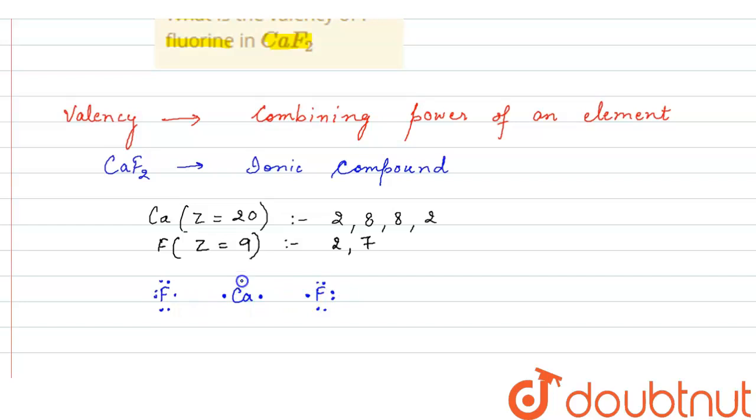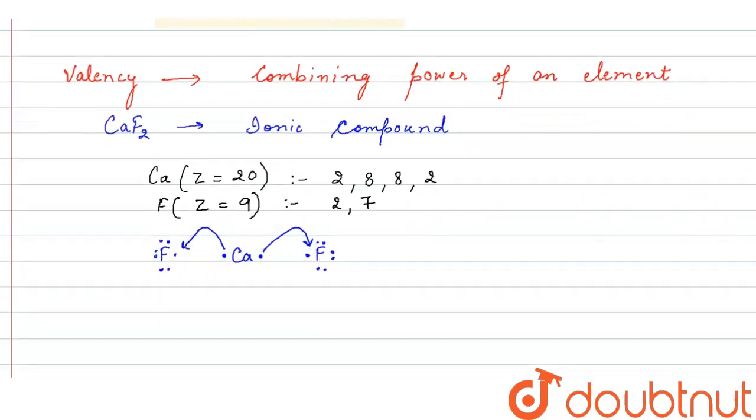So the outermost electrons of calcium are donated. Calcium loses these 2 electrons and these 2 electrons are donated to fluorine atom. So in this way calcium loses 2 electrons and comes in 2 positive state and fluorine by gaining 1 electron forms negative ion.